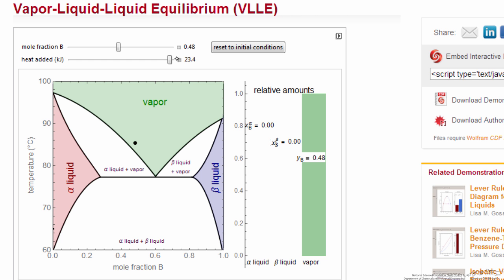Let's look at one other case. Suppose I start with an overall composition that's a much higher mole fraction of component B, and then I'm going to do the same thing, starting with two liquids.